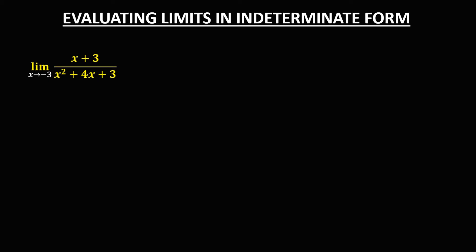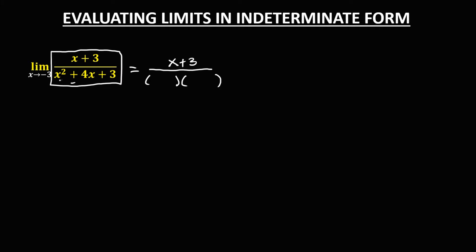For this next given problem, using direct substitution also gives an indeterminate form, so we need to reduce using factoring. We copy the numerator, which is (x + 3). For the denominator, since it's a quadratic equation, we use quadratic factoring. The factors of x squared are x times x, and the factors of 3 are 1 times 3, giving (x + 3)(x + 1), with all positive signs.